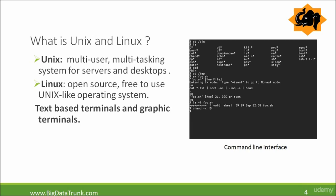Both Linux and Unix have text-based terminals and graphic terminals. Text-based terminals refer to a command-line interface where the user can type commands — this is the shell in Unix, similar to the Windows command prompt. Graphic terminals, on the other hand, include graphics, icons, and menus, as you can see in the Windows operating system. So Linux and Unix both come with text-based terminals as well as graphic terminals.